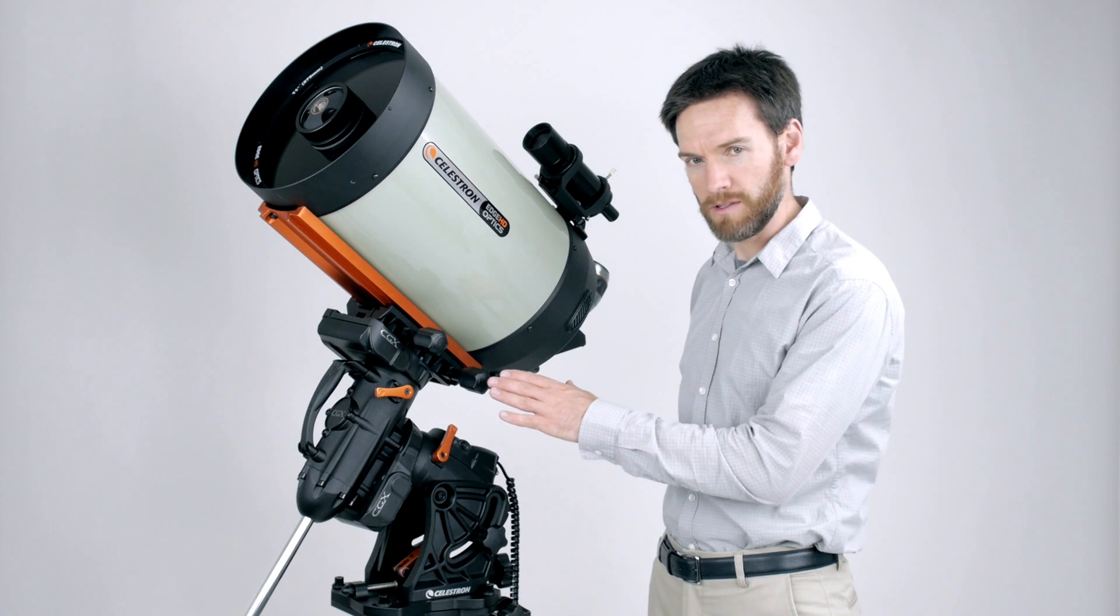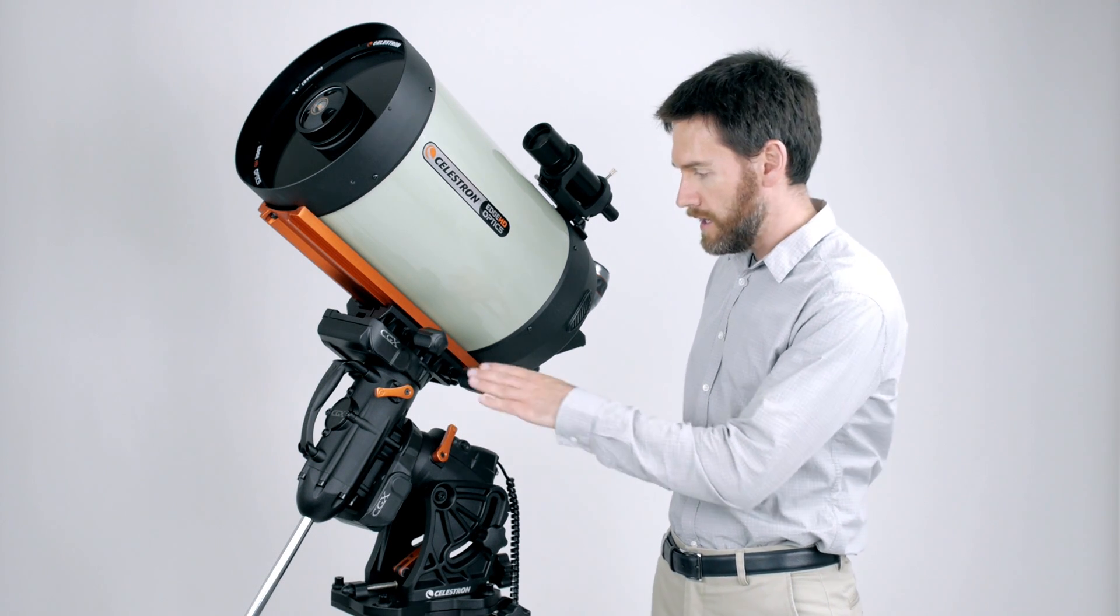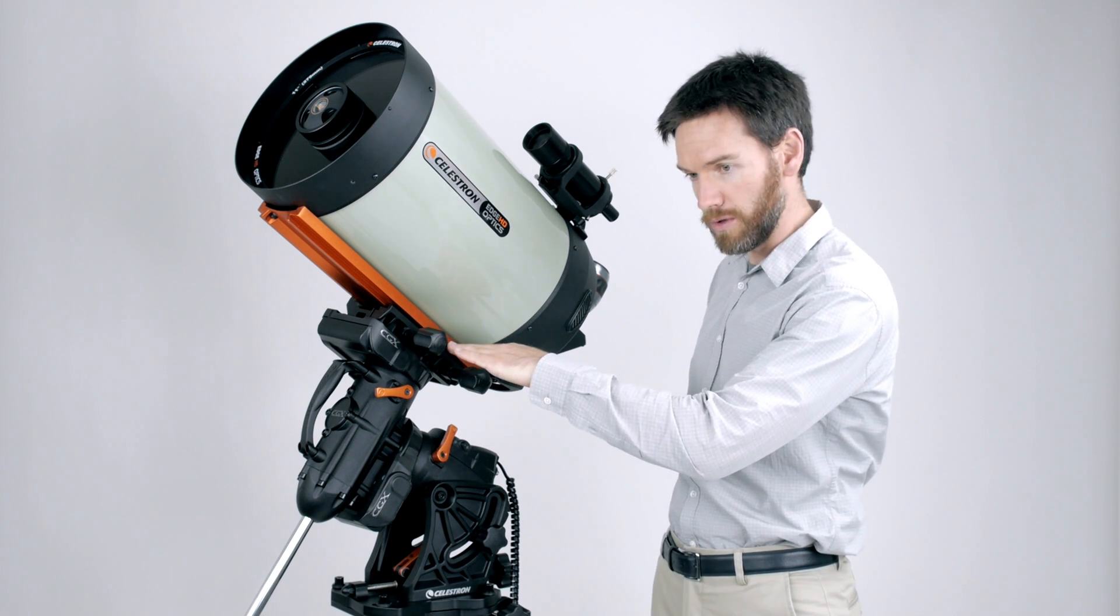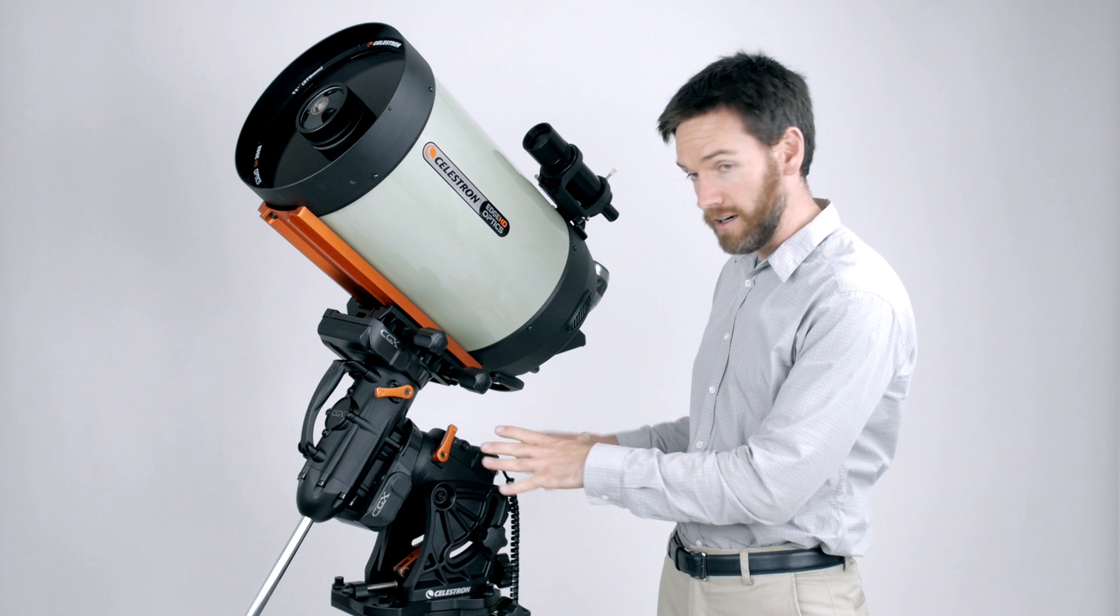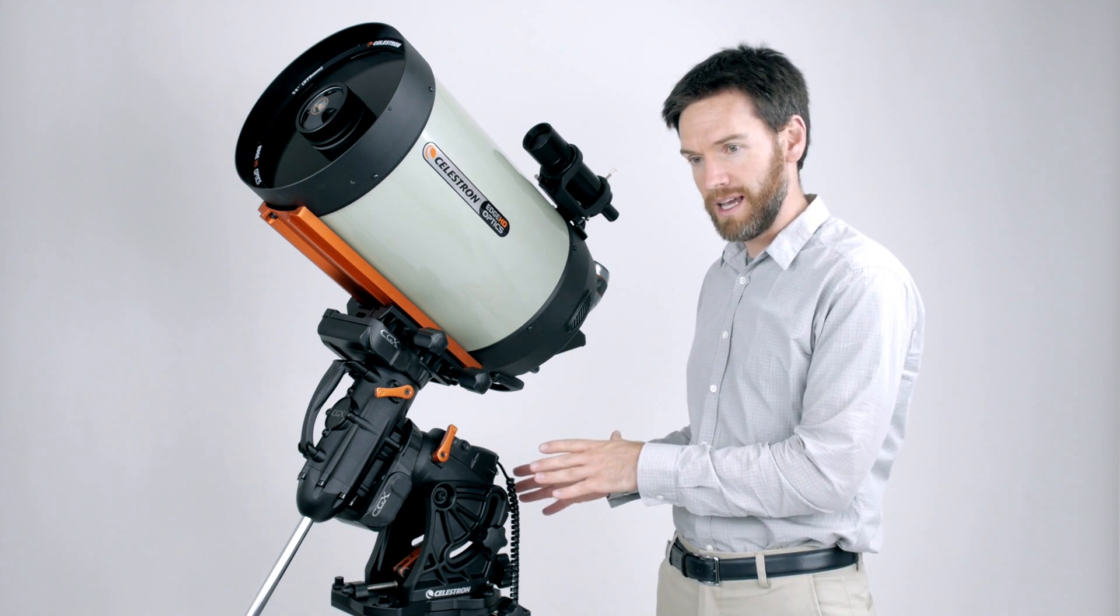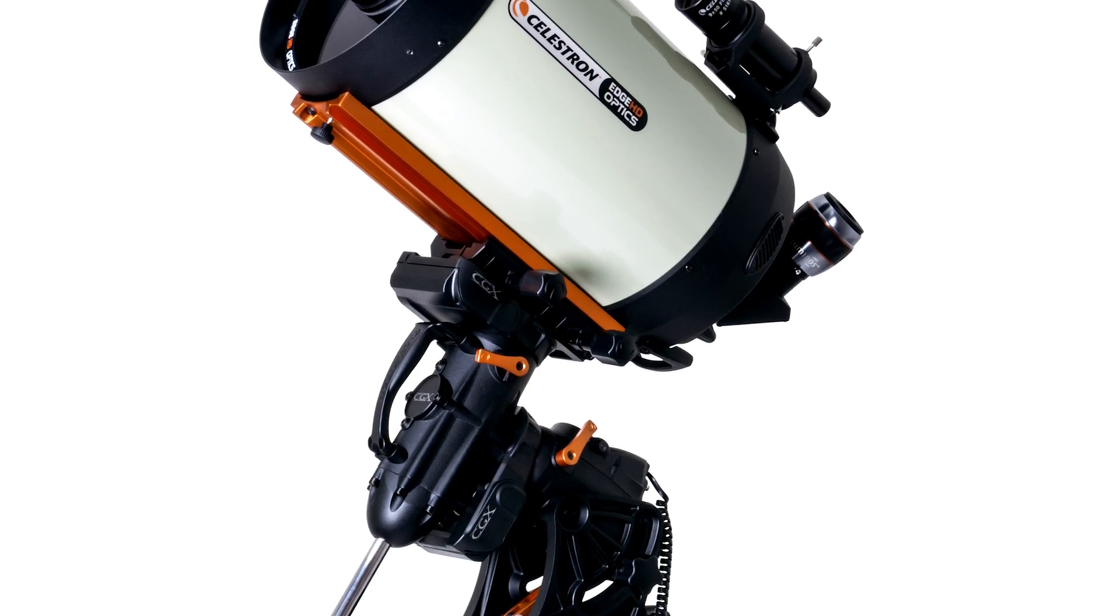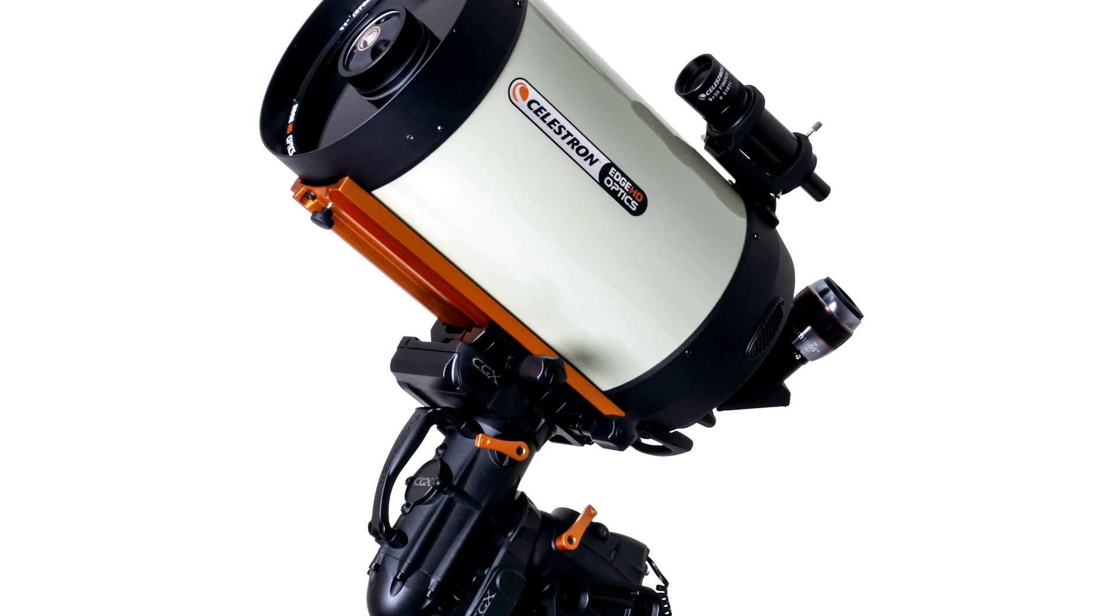The mount itself is much more compact and rigid. It actually sits a couple inches shorter than the CGEM mount did, and it is more rigid. As a result, it has a much higher load capacity that will now support 55 pounds for a total payload.